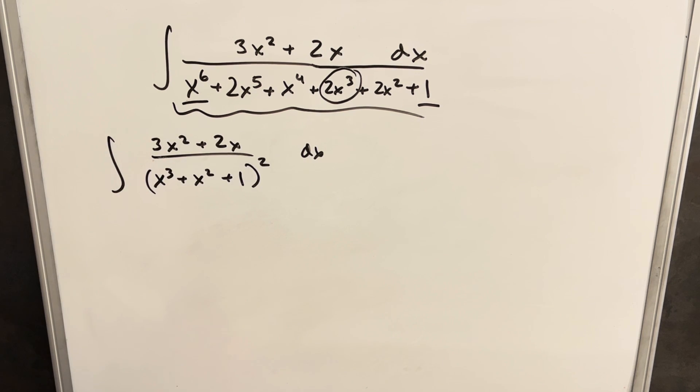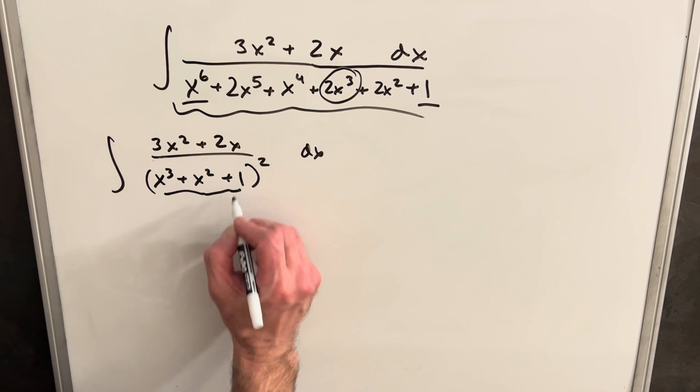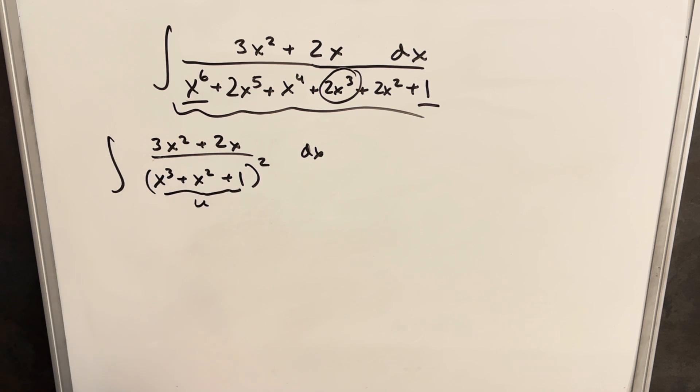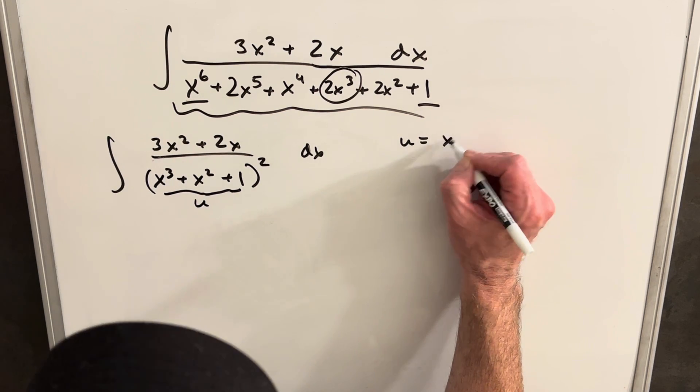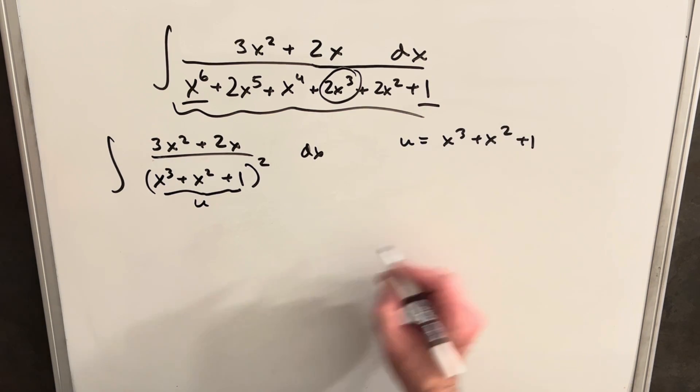Okay, so now that we factored our denominator, I think it's pretty clear a u substitution is going to work. So we're just going to make this inner piece our u, and then let's see what happens. If u is x cubed plus x squared plus 1,